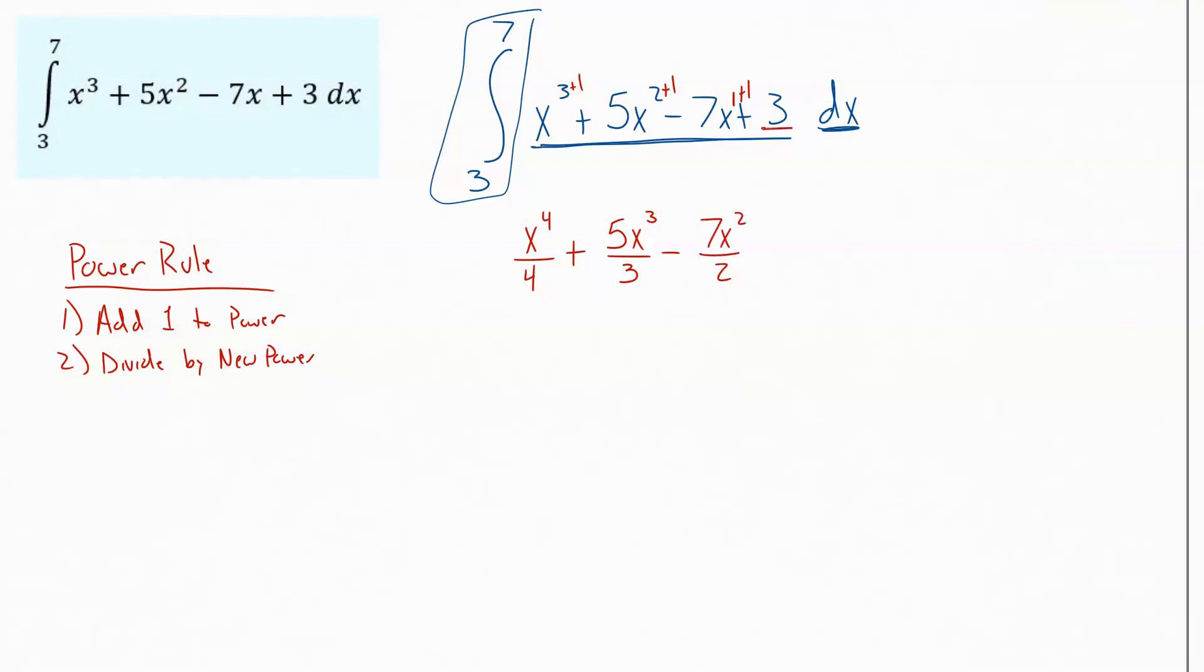At the end here, we have a constant, a number by itself. When we were taking derivatives, constants went away. Since we're undoing derivatives, we're going back the other direction, so constants gain a letter back. So we're going to put a 3x there.